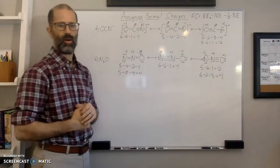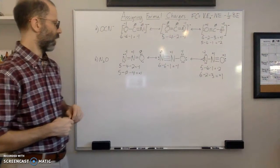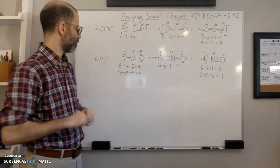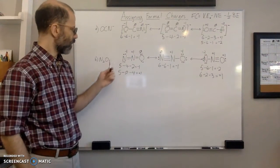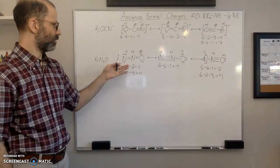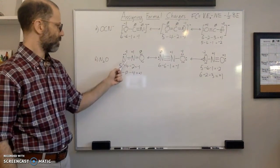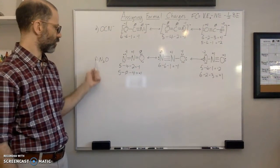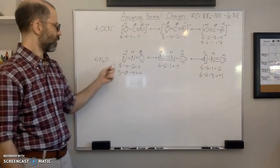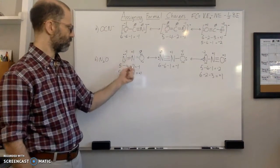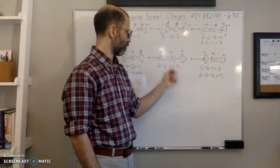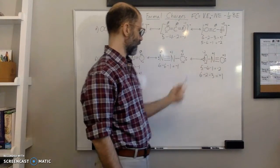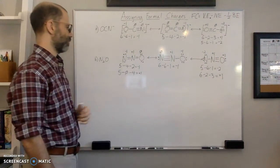Now that we have all the formal charges figured out, we check that they add up to the overall charge on the molecule, which is zero. In the first structure: negative one plus one plus zero equals zero. In the second: zero plus one plus negative one equals zero. In the third: negative two plus two times positive one equals zero. So all three structures check out.